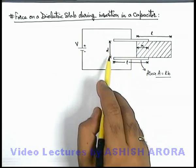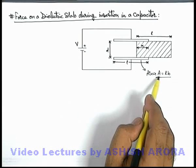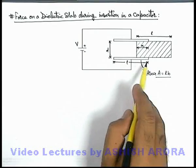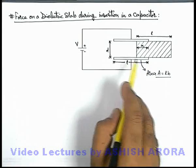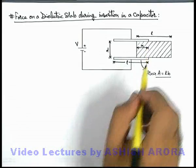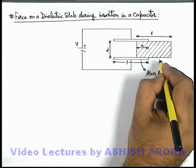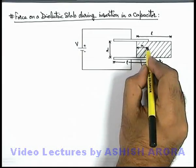We are also given that the plate separation is d and plate area is lb, where l is the length of the plate and b is the width of the plates. Now in this situation when the dielectric, say its dielectric constant is K, fills up to a distance x.